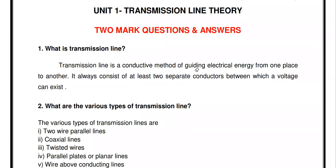The first question: what is a transmission line? A transmission line is a conductive method of guiding electrical energy from one place to another. If you want to carry power from one place to another, we use a transmission line. It always consists of two separate conductors, and between those two conductors a voltage can exist. This is called a transmission line.